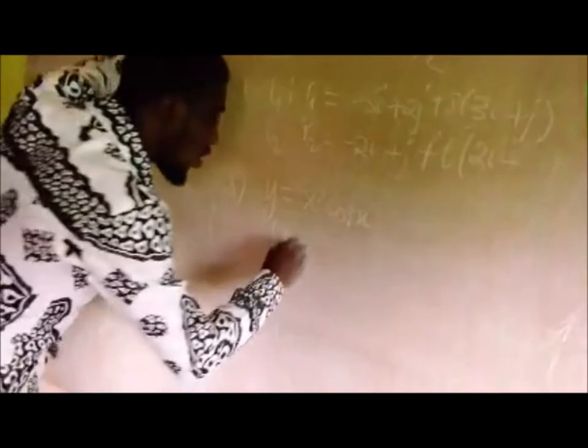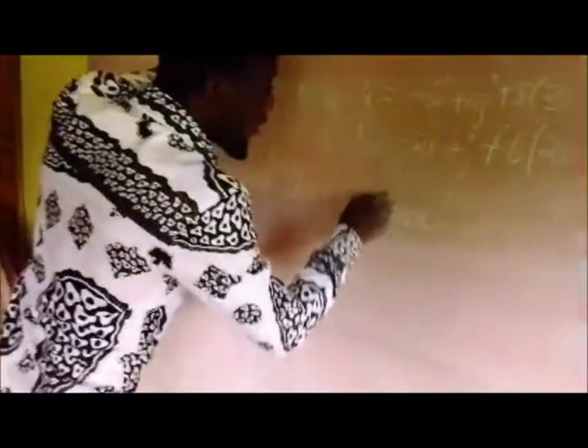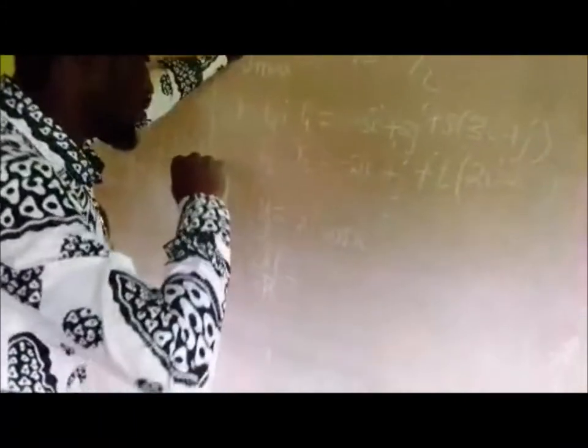To differentiate this, we want to make use of the product rule. The product rule says you need to keep one of the terms constant and differentiate the other, and later on keep the other one which you differentiated constant and differentiate the other one.